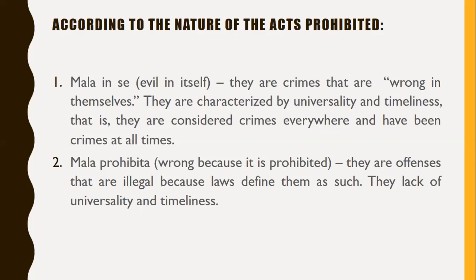Mala prohibita means wrong because it is prohibited. These are offenses that are illegal because laws define them as such — they lack universality and timeliness. Examples of mala prohibita include gambling, trespassing, prostitution, illegal logging, and illegal possession of firearms — these are prohibited because there is a law forbidding them.